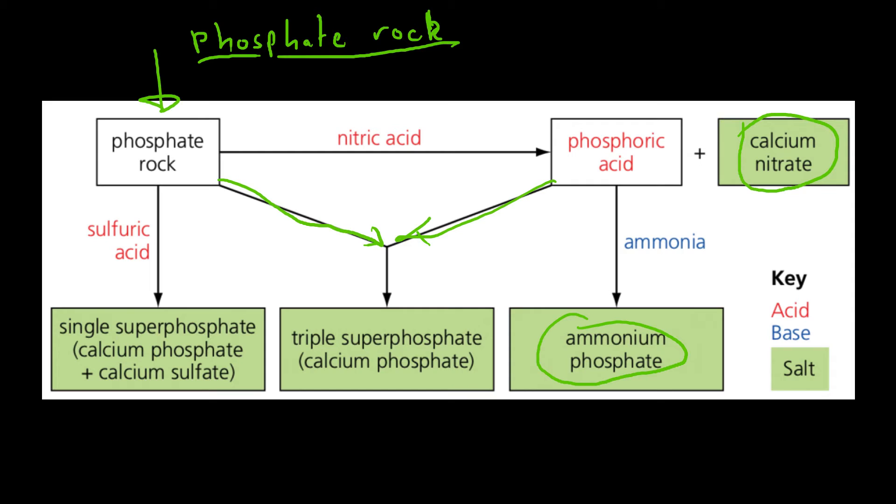Importantly, those arrows can confuse things. Just remember that phosphate rock and ammonia are your two starting reagents. If you add your acids to them, then you get your salts. Then you just want to remember how we can actually make the acids and that's why you've got your extra arrows. And that is it.